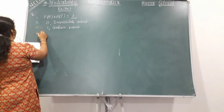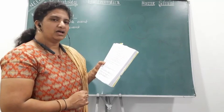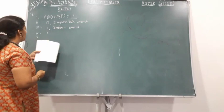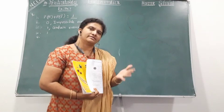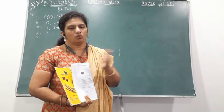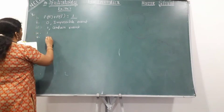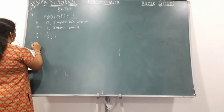You also have a fourth fill-in-the-blank. The probability of an event is greater than or equal to zero and less than or equal to one. We already discussed what is the range of probability. Probability range will be between 0 and 1. Probability can never be negative and it is not more than 1. So your first answer is 0 and your second answer is 1.